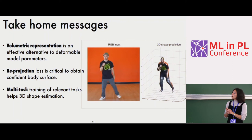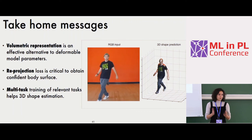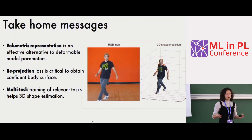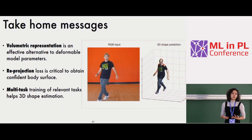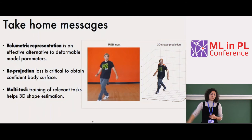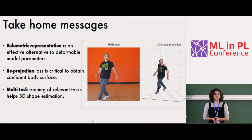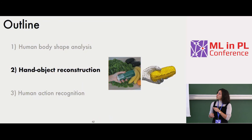Take-home messages from BodyNet: the volumetric representation is an effective and simple alternative that should not be forgotten — it's easy to learn and flexible. The reprojection loss was critical; before adding it, results were disappointing, but the moment we added this loss, we were satisfied qualitatively. And multitask training helps: if you have relevant tasks, break the difficult task down into simpler ones to guide the network.